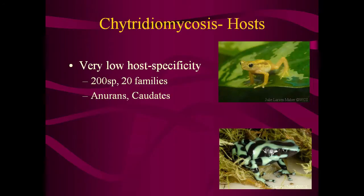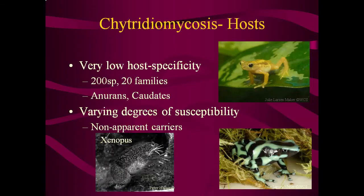The amphibian chytrid fungus has very low host specificity, as demonstrated by identification in over 200 species and 20 families representing both anurans and caudates. It should be noted that not all amphibian species are equally susceptible to the fungus. There are many species that can become colonized by BD and show no clinical signs. These animals then act as inapparent carriers and may spread the disease to species that are susceptible.